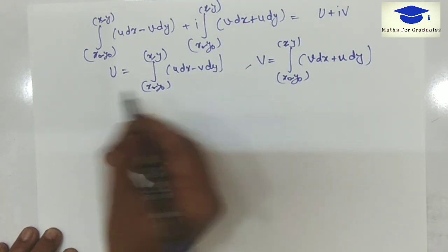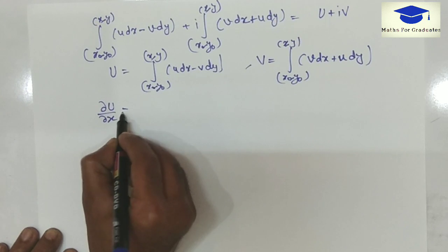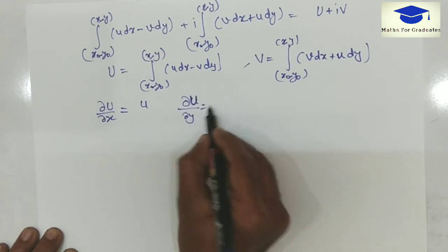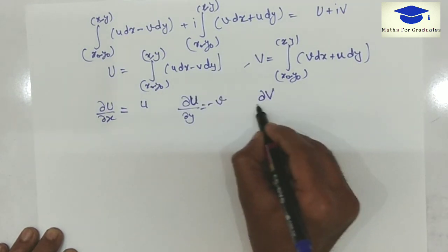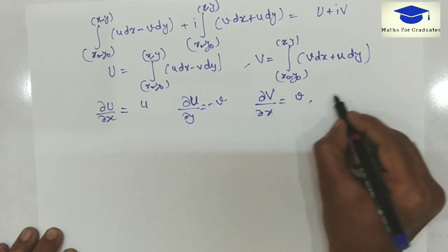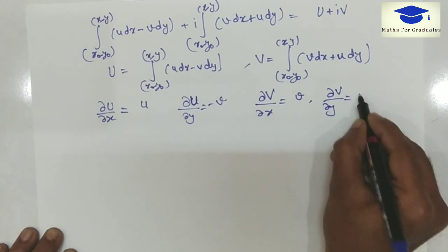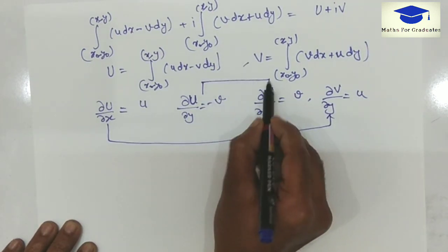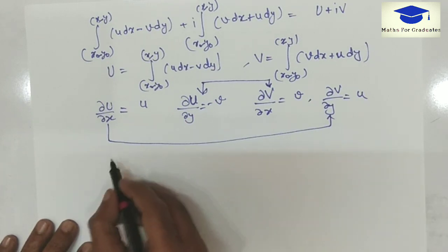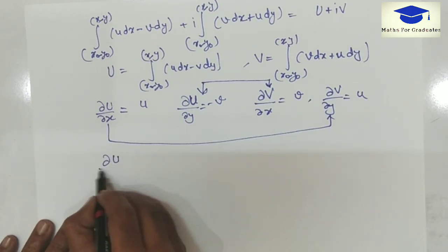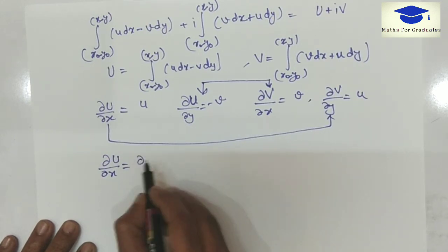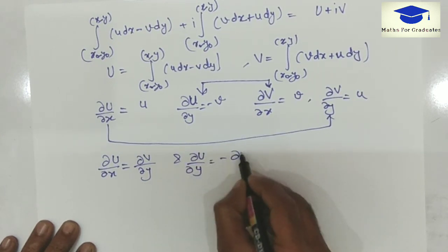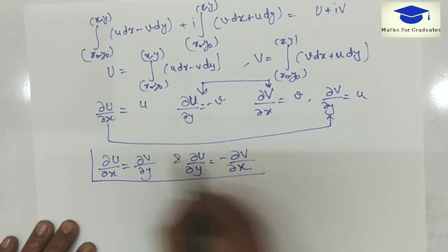Now differentiating partially with respect to x, we will get ∂U/∂x is u, ∂U/∂y is -v. Similarly here, ∂V/∂x is v and ∂V/∂y is u. On seeing this, we can see this equals to this and this is equal to this. Now we can write here ∂U/∂x equals to ∂V/∂y and ∂U/∂y equals to minus ∂V/∂x. This is nothing but Cauchy-Riemann equation.